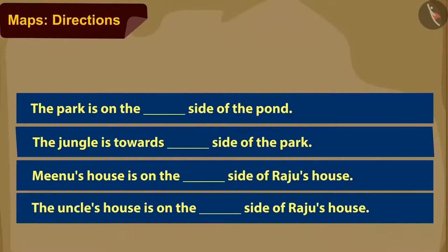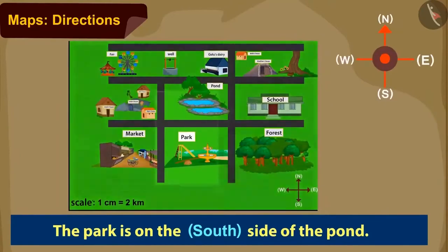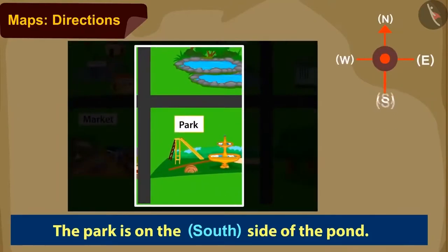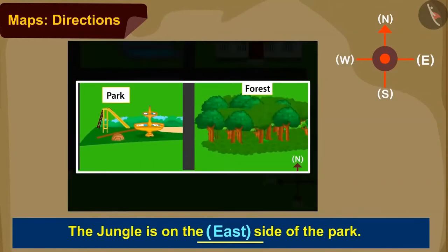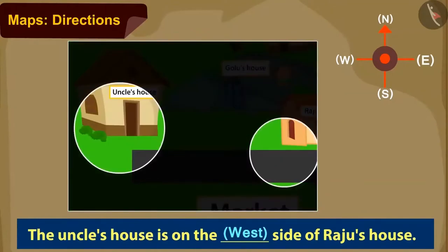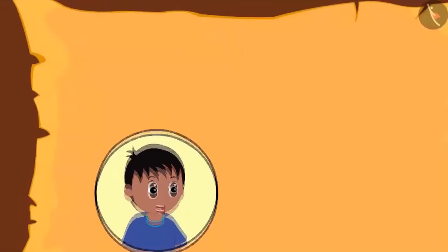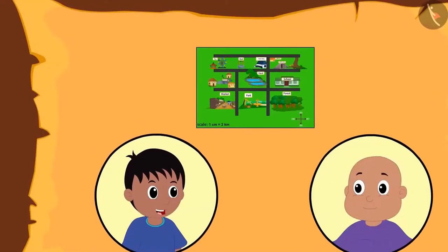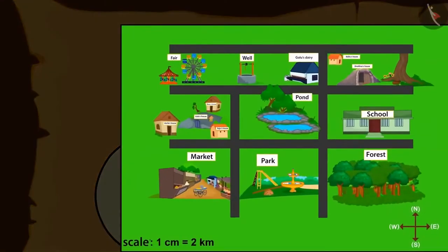Kids, you answered all of them correctly. The park is towards the south of the pond. The jungle is towards the east of the park. Meenu's house is to the north of Raju's house. And uncle's house is to the west of Raju's house. Raju and Bablu are playing their interesting game — you too can play it with your friends using the map of Champapur, making your own questions about directions.